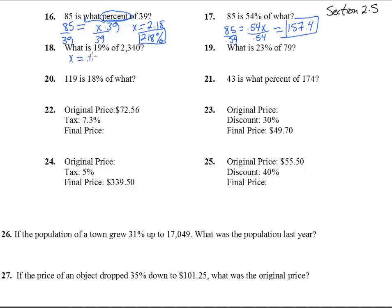What is 19%, that's .19, of 2,340? This we don't even have to solve, x is already by itself, we just need to punch it in the calculator, and we get 444.6, round to the nearest tenth there.